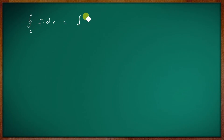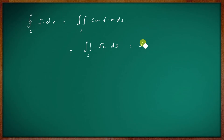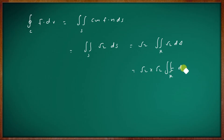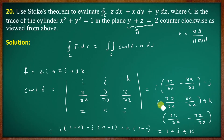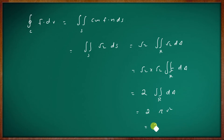Applying Stokes' theorem: the integral over C of F · dr equals the double integral over S of curl F · n dS. The dot product curl F · n = (i + j + k) · (j + k)/√2 = (1 + 1)/√2 = 2/√2 = √2. So the surface integral equals √2 times the area of the region R, where x² + y² = 1 is a circle with area π(1)² = π. Therefore the answer is √2 · √2 · π = 2π.